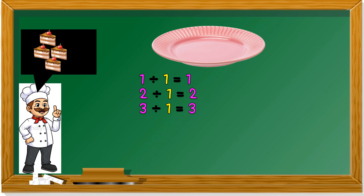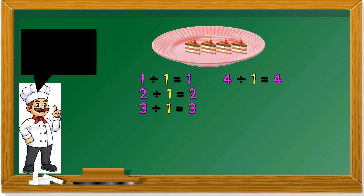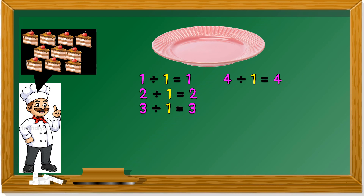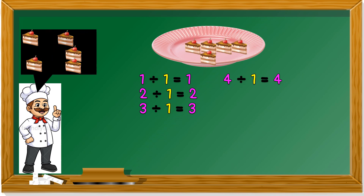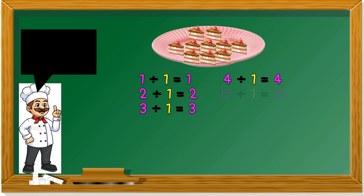Four cakes and still one plate: 4 divided by 1, we still get 4. Now how about 10 cakes? There are 10 cakes but I only have one plate, so if I divide them into one plate and put them all in: 10 divided by 1 is 10.